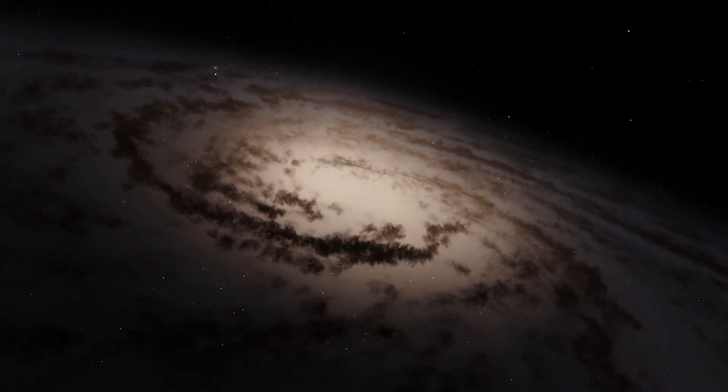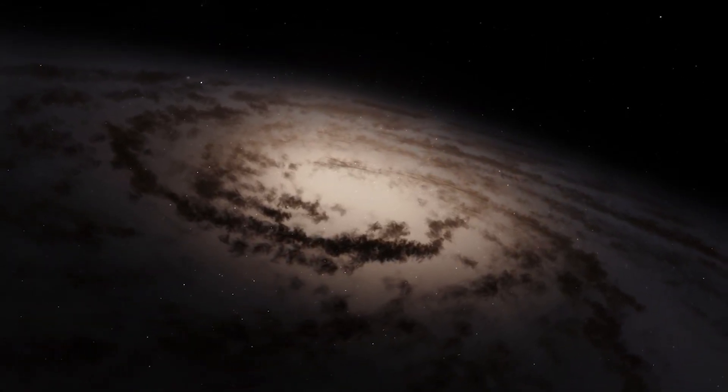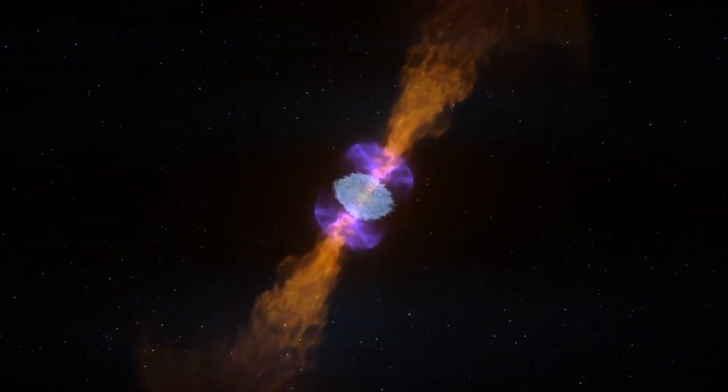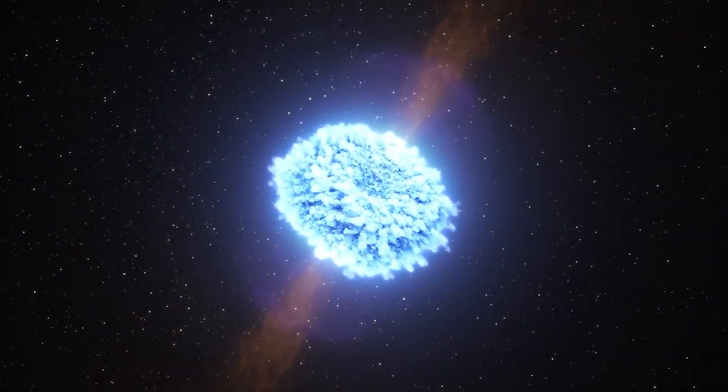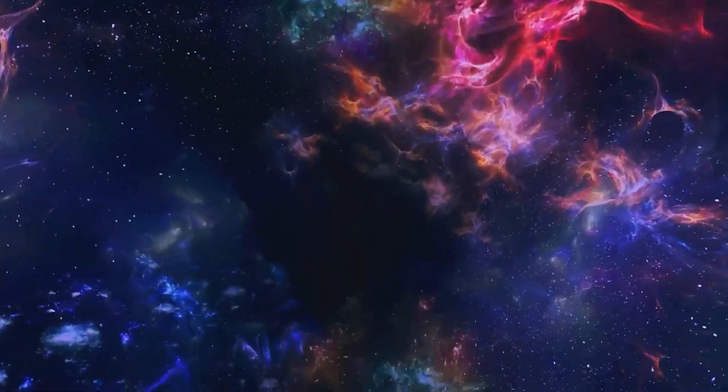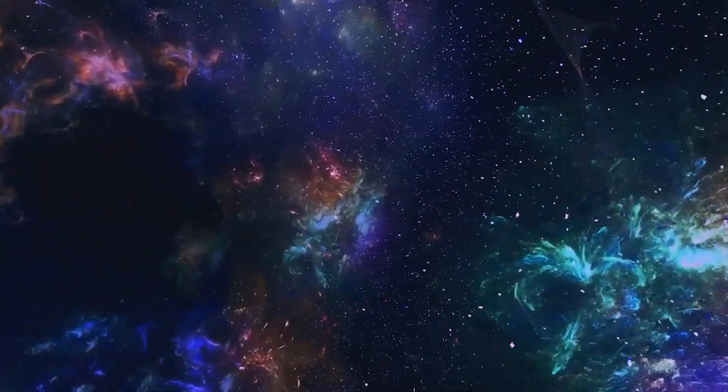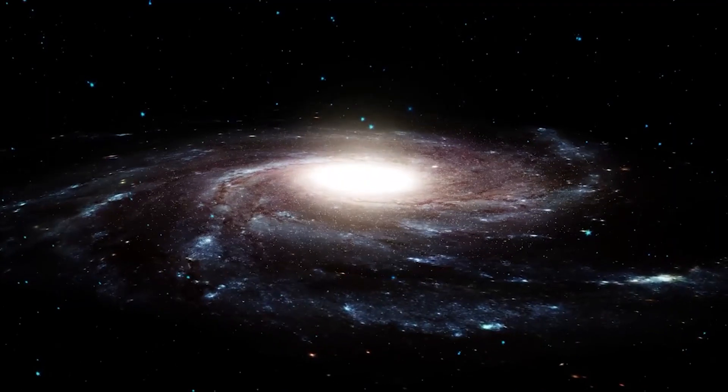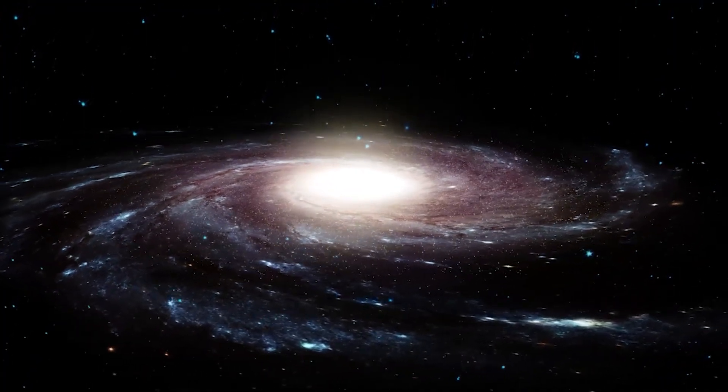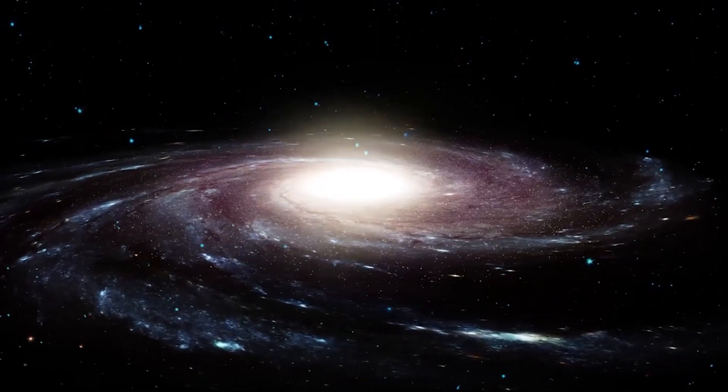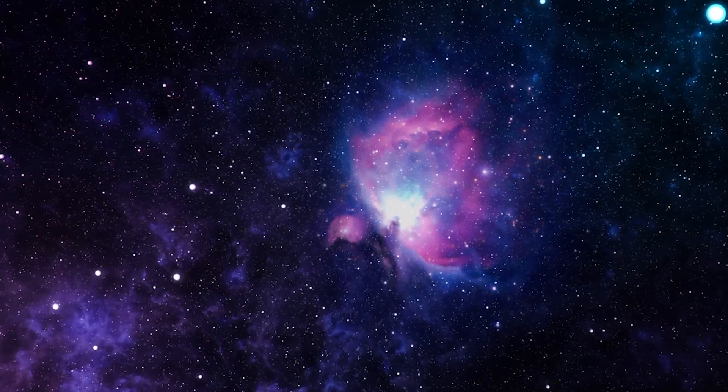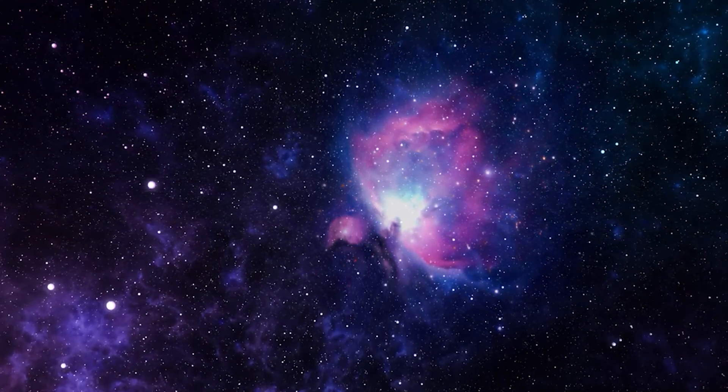Sounds like a sci-fi movie, right? But if a gamma-ray burst from just a hundred light-years away hits us, this could become a real-life disaster. Gamma-ray bursts are like the rock stars of space explosions. They're insanely bright, packing as much power as the sun gives off in its entire ten-billion-year life. These bursts are so powerful that when they were first discovered in the 1960s, scientists thought they were coming from our own galaxy, the Milky Way. But here's the twist: these bursts actually come from millions and billions of light-years away. That's like saying their power is out of this world. Literally.